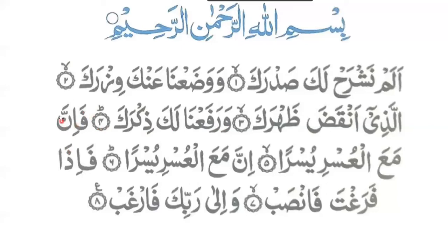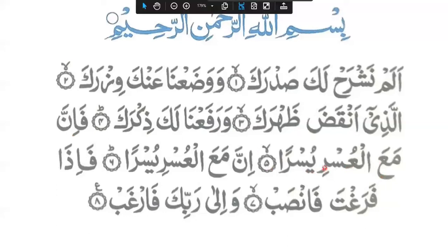Next ayat: Fa inna ma al-usri yusra. 'Fa' then 'inna' — the 'e' joins with a noon with shadda. Then 'ma al' — the ayin joins with a lam, sukun — then 'usri'. Then 'yusra' — stretch the ra for two counts. Full: Fa inna ma al-usri yusra.